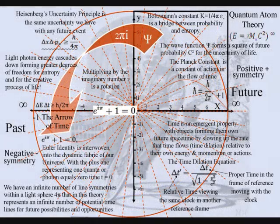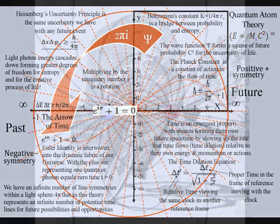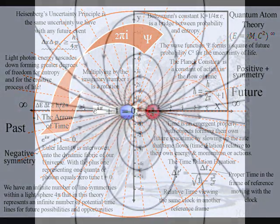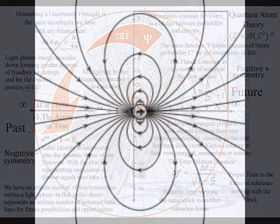In this diagram of the complex plane, the zero in the center represents the moment of now, t equals zero, with the positive numbers marching off into an infinite future, the negative numbers receding into a limitless past. The great symmetry between the positive and negative numbers represents the symmetry between positive and negative charge.